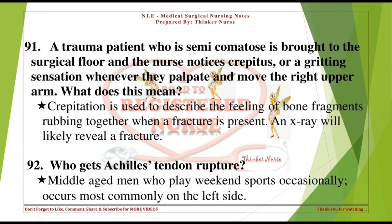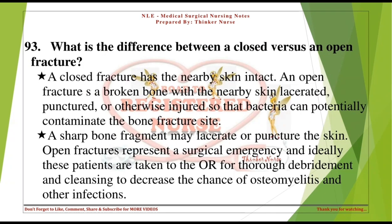Who gets Achilles tendon rupture? Middle-aged men who play weekend sports occasionally; occurs most commonly on the left side. What is the difference between a closed versus an open fracture? A closed fracture has the nearby skin intact. An open fracture is a broken bone with nearby skin lacerated, punctured, or otherwise injured so that bacteria can potentially contaminate the bone fracture site.